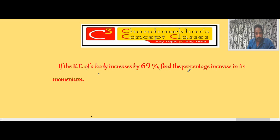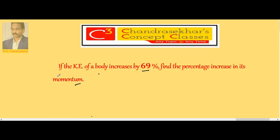If the KE of a body increases by 69 percent, find the percentage increase in its momentum. Here kinetic energy is increasing by 69 percent; what must be the corresponding percentage increase in its momentum? Let us consider the relation between kinetic energy and momentum. We know that e is equal to p square by 2m, which implies e is proportional to p square.